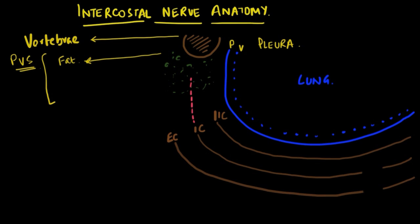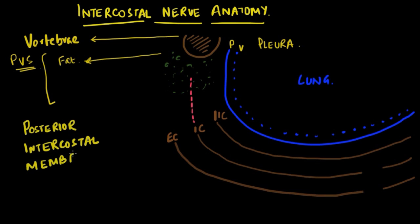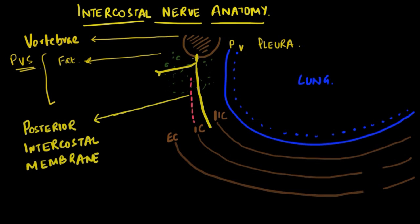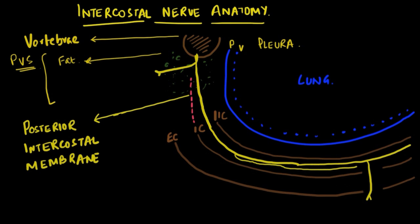There is a posterior intercostal membrane that extends from the internal intercostal muscle, attaching itself to the transverse process. As the spinal segmental nerve traverses laterally, it comes to lie between the posterior intercostal membrane and the parietal pleura. The spinal segmental nerve divides into a dorsal branch and a ventral ramus, which continues forward as the intercostal nerve giving its different branches as shown.